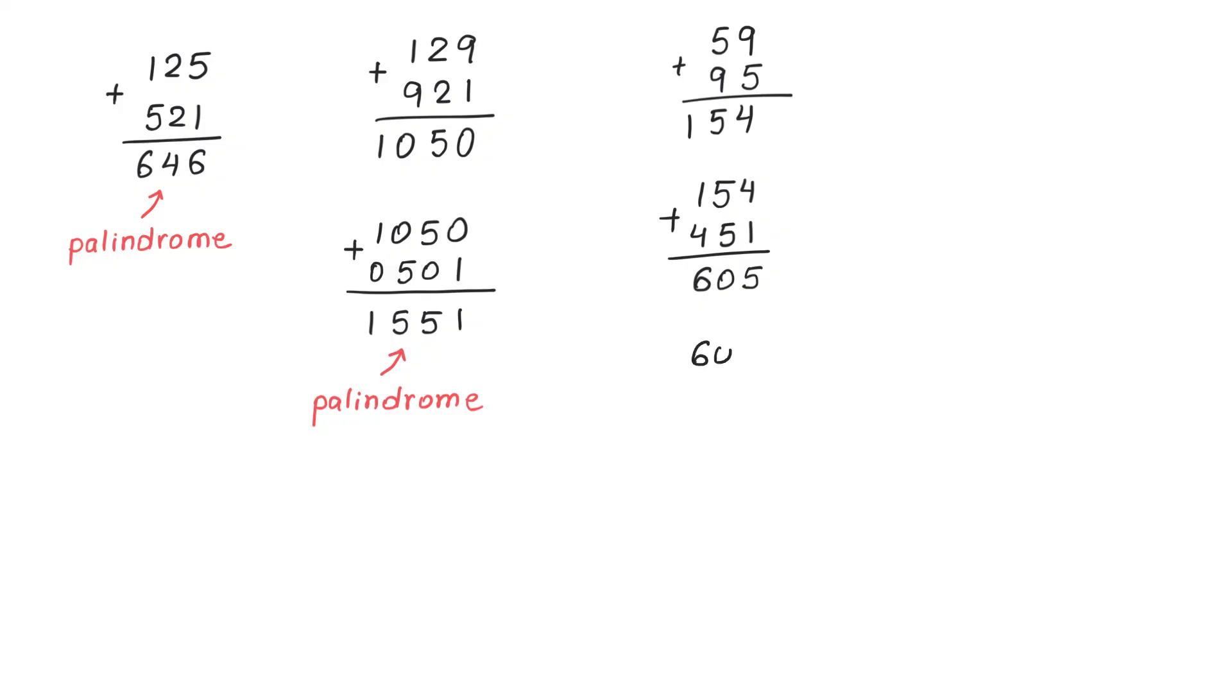We will take 605 and we will reverse it and get 506 and now let's add. Now the result will be 1111 and this number represents a palindrome.